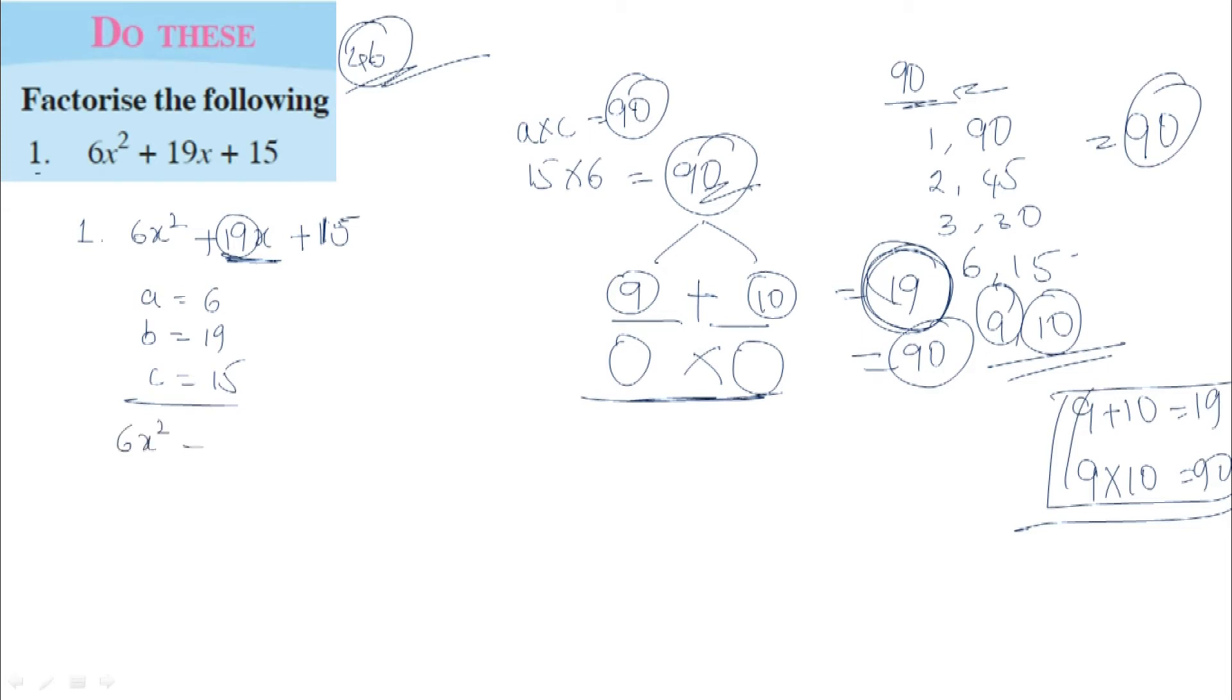6x² + 19x, we split as 6x² + 9x + 10x + 15. Now take 3x common from the first two terms.